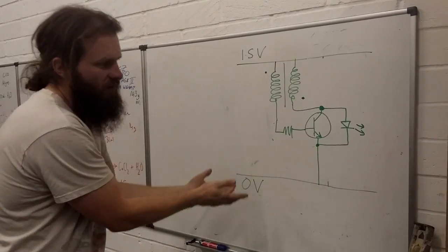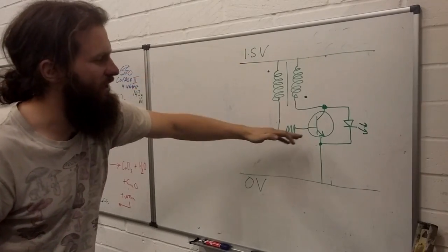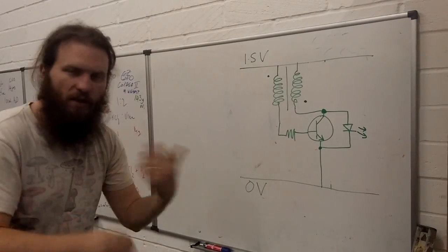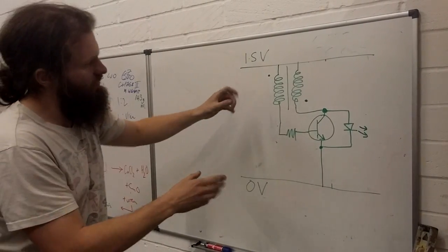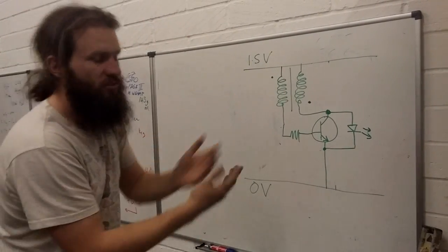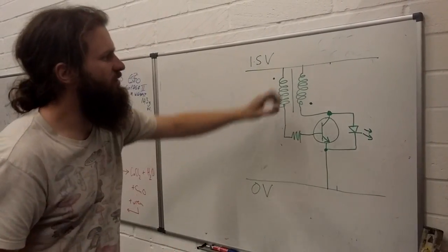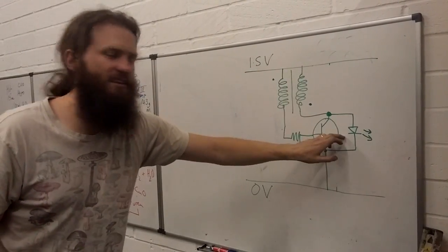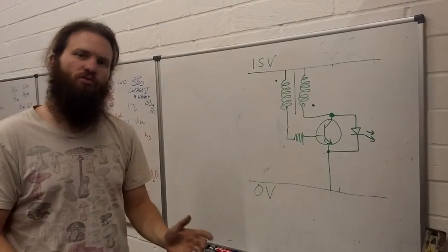Once it's off again, the current can start flowing forward again, inducing a current in the secondary. And through this feedback loop, this transistor turns on and off very rapidly. And the turning on and off rapidly allows, when this field collapses, to drive the LED. So that's how the joule thief works.